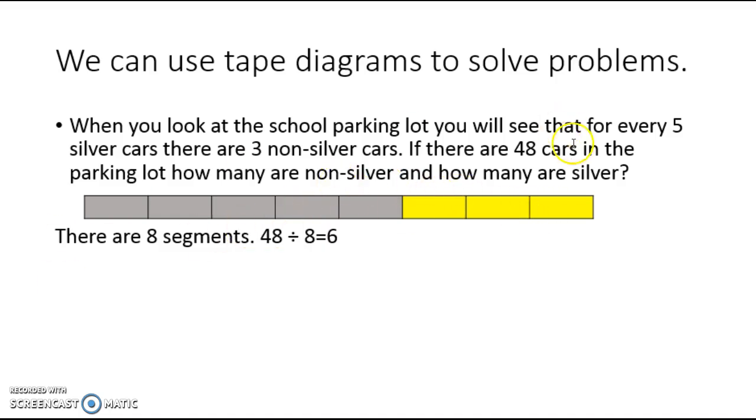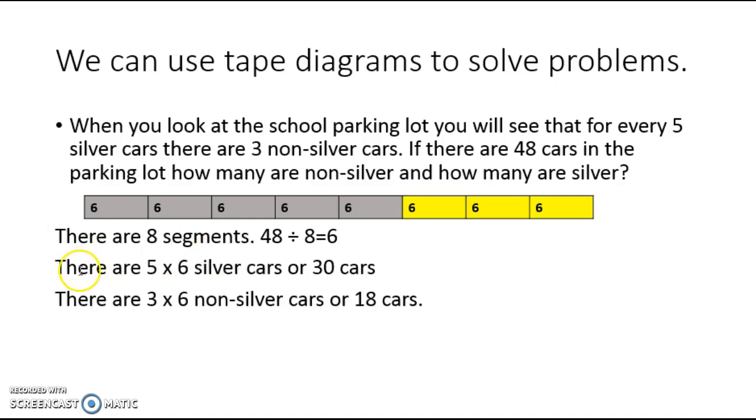Now, I know that there are 48 cars in the parking lot, so I need to evenly distribute these 48 cars across these eight segments. That's 48 divided by eight, which is six. I'm going to add six to each one of my segments, and then I can use this to solve the problem. For instance, I know that there are five times six silver cars in the parking lot, and there are three times six non-silver cars in the parking lot. So 30 silver cars, 18 non-silver cars.